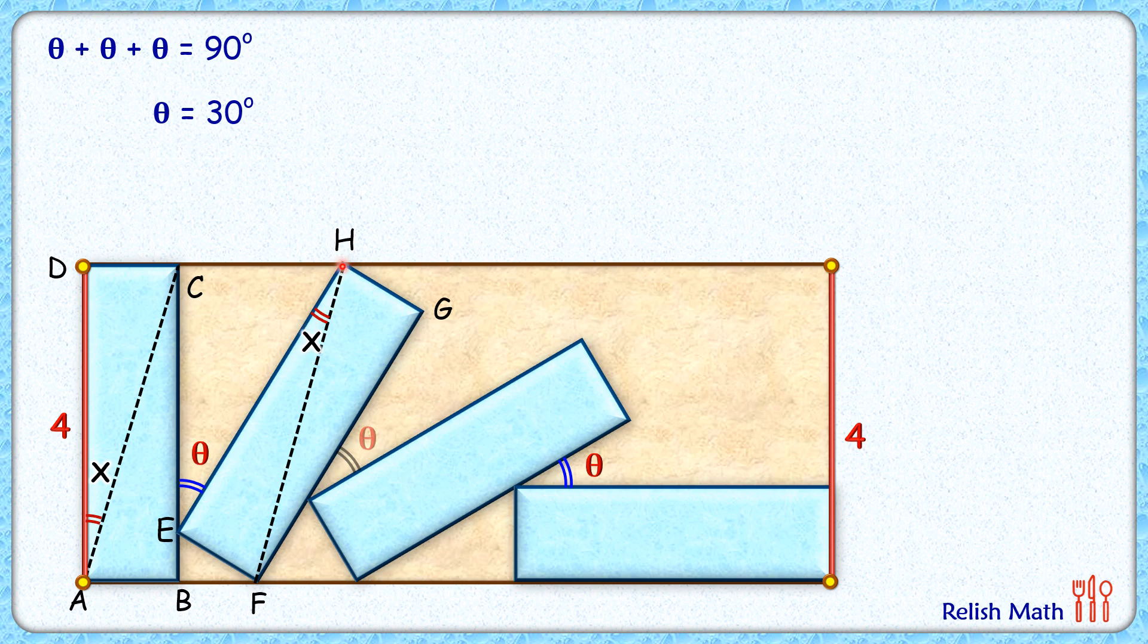Next, let's drop a perpendicular from H onto the base length. If you compare this pink triangle and this yellow triangle, HI length is the same as the width of the bigger rectangle, 4 centimeters, and EI is the same as the length of the blue rectangle, also 4 centimeters. This angle is 90 degrees.